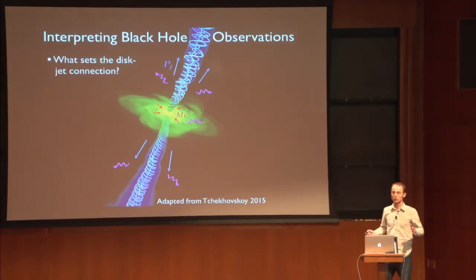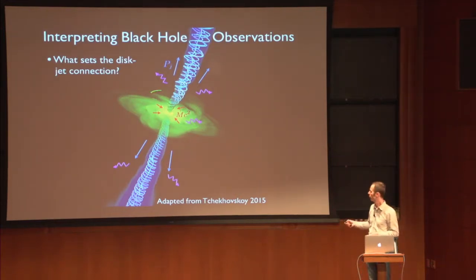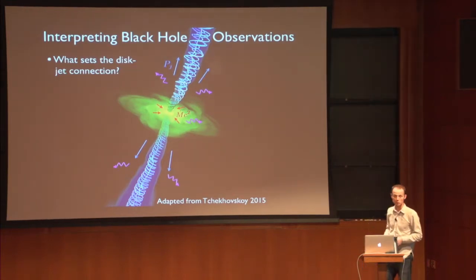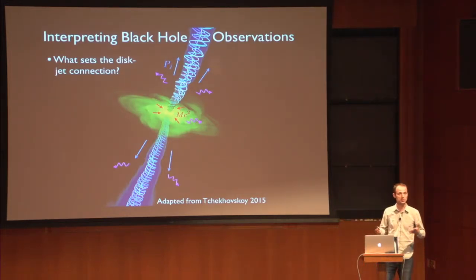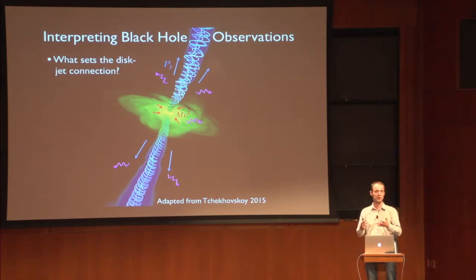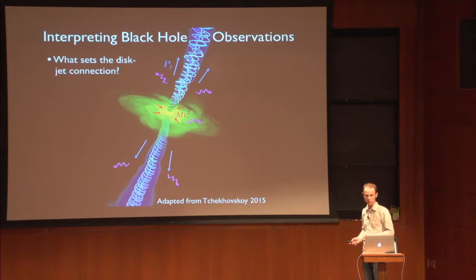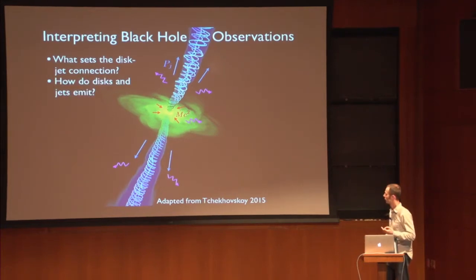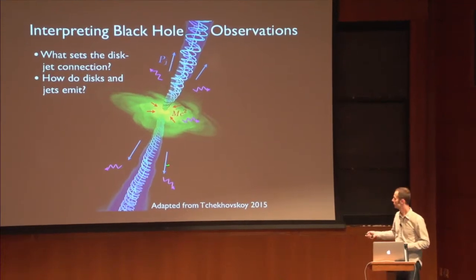Why do we care about the disk-jet connection? Because we would like to have as many ways as possible of understanding what's happening down there in the central engine. One way is the radiation from the accretion disk. The other way is radiation from the jets that extend out to large distances and allow us to probe the strong-field gravity near the black hole. An important question is to understand how the properties of an accretion disk connect to those of the jet.